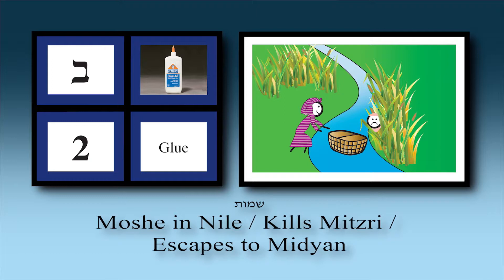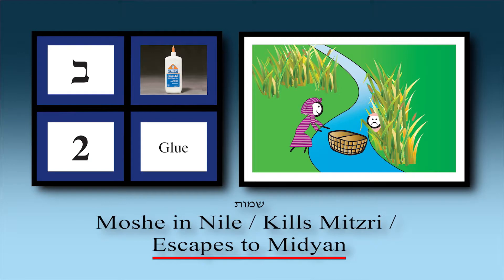Moshe lived in Pharaoh's palace for 19 years. After 19 years he stopped Datan and Aviram from fighting — this was after he had killed the Egyptian. In court he was convicted for murder of an Egyptian soldier, but the sword used to behead him bounced back and killed the executioner. Moshe fled and arrived in Midian, eventually marrying one of the daughters of Yitro — Tziporah. All of this is in chapter two.